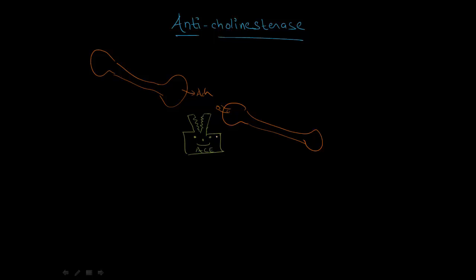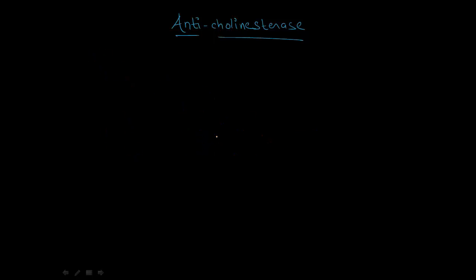This anticholinesterase has two sites which can split acetylcholine into two parts with the help of water — it needs water. When acetylcholine comes and binds over the anticholinesterase, the acetylcholinesterase can hydrolyze the acetylcholine, so that acetylcholine will break down into acetic acid and choline. Choline can be further reuptaken by the nerve endings and re-synthesized there.